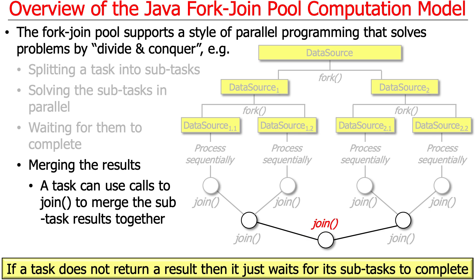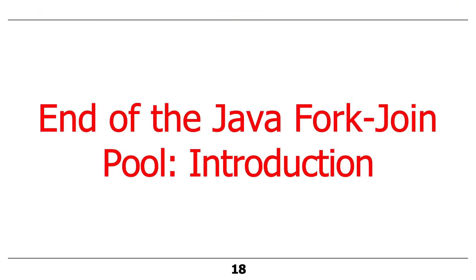I've been describing this as if join always returned a result, but it's also possible for join not to return a result — it can just return with nothing. So there are two different kinds of joins: one where you get a result back, and one where you just wait for the computation to finish and then continue. That's the end of the introduction. At this point you probably have a vague idea of what the fork-join pool is about, but how it actually works may still feel somewhat mystical, and that's perfectly okay. We'll get into those details in just a minute.